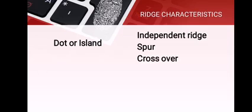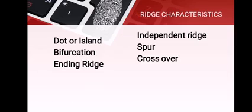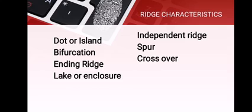There are seven ridge characteristics: dot or island, bifurcation, ending ridge, lake or enclosure, independent ridge, spur, and the crossover.